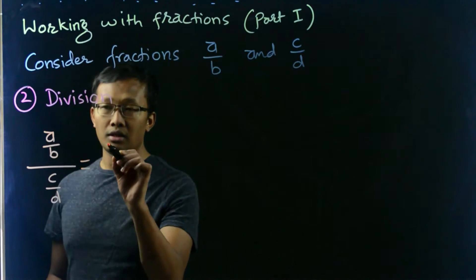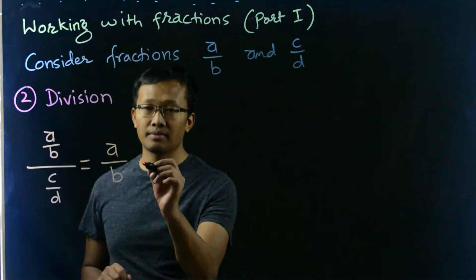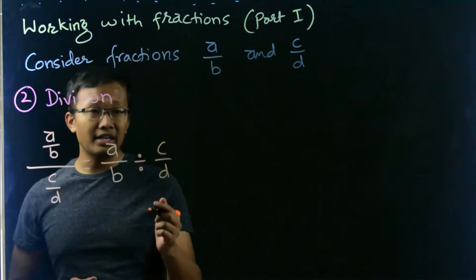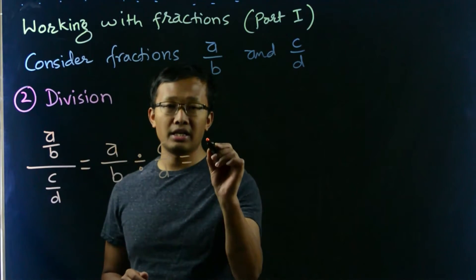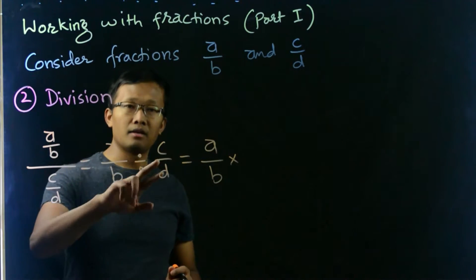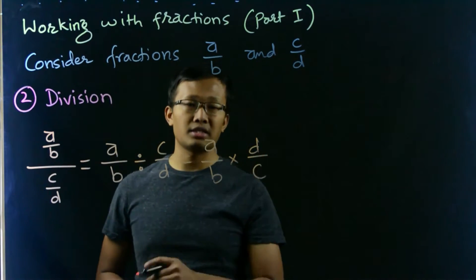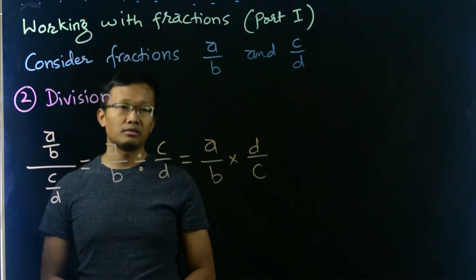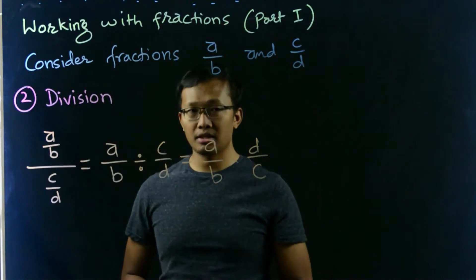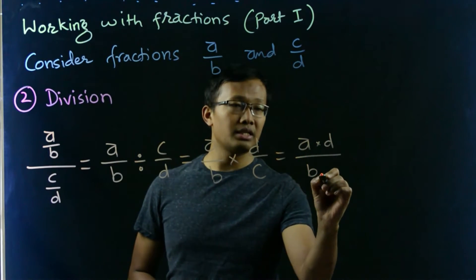Divided by c by d, then finally it can be written as a by b times—but take the reciprocal of c by d, which is d over c. Then we can simply multiply the numerators and multiply the denominators, which is a times d divided by b times c.